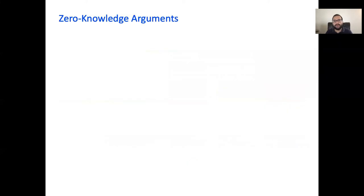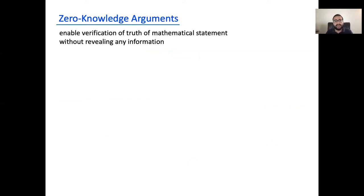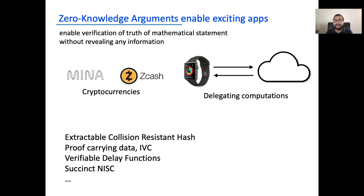Zero-knowledge protocols are a cornerstone of modern cryptography and they enable a verifier to check the truth of an arbitrary mathematical statement without revealing any information. Zero-knowledge enables a number of exciting applications including delegating computations to the cloud and cryptocurrencies with interesting properties like succinctness and privacy.